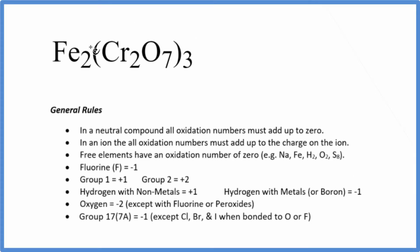In this video, we'll figure out the oxidation number for iron in Fe₂(Cr₂O₇)₃. This is iron(III), and this is the dichromate ion. So iron(III) dichromate.